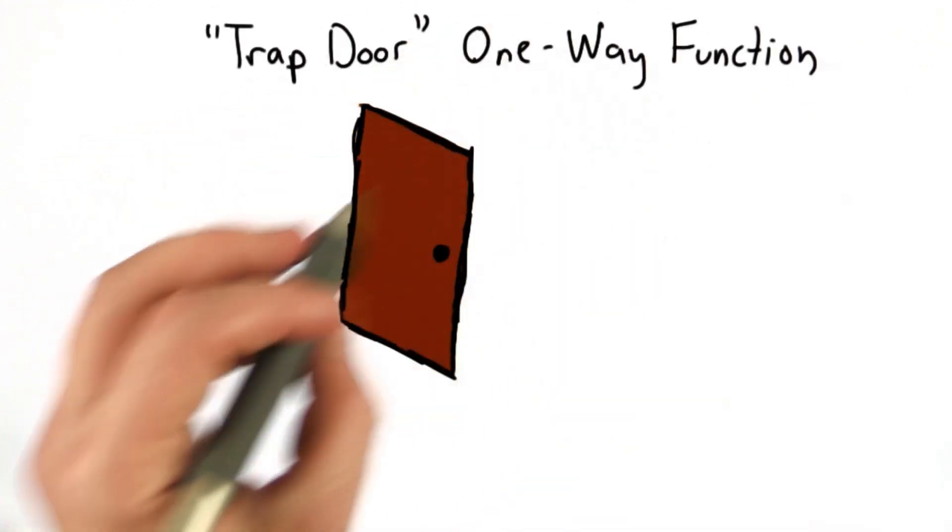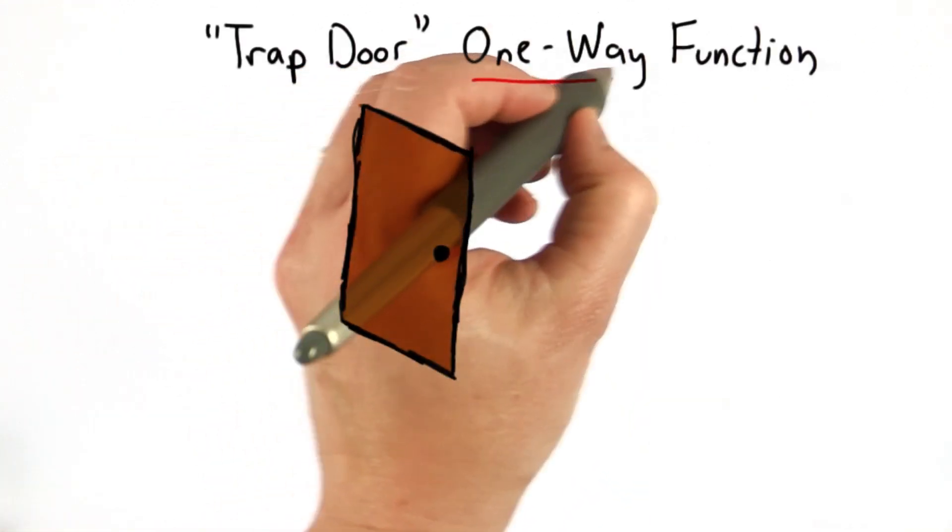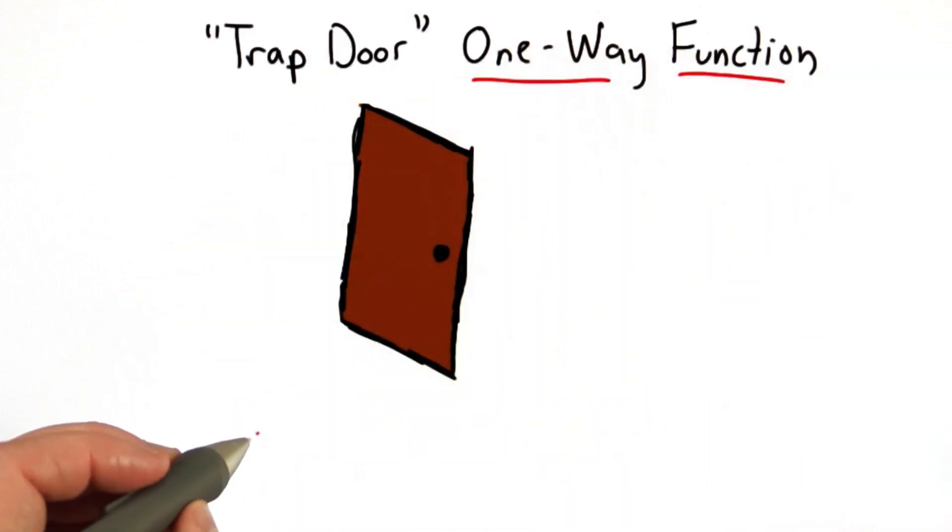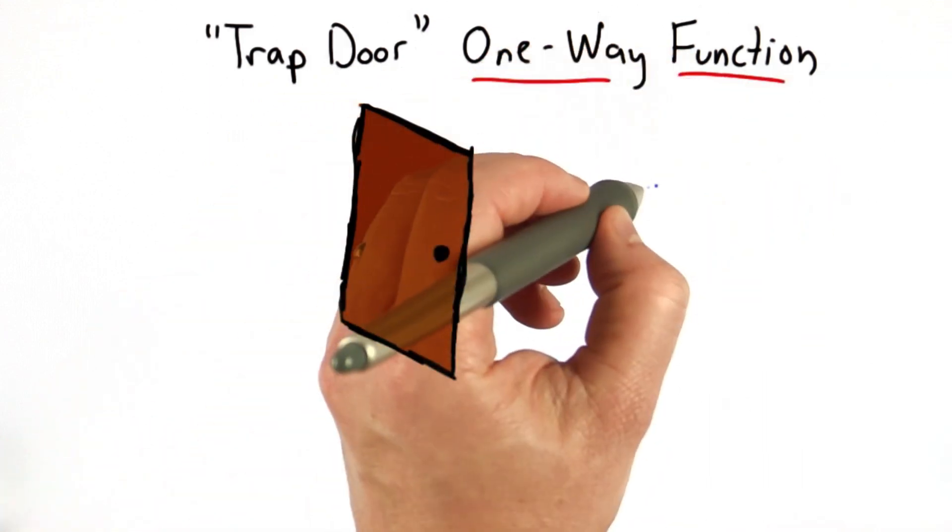What we want to build is what's known as a trapdoor one-way function. A one-way function would be a function that is easy to compute in one direction and hard to compute in another direction.